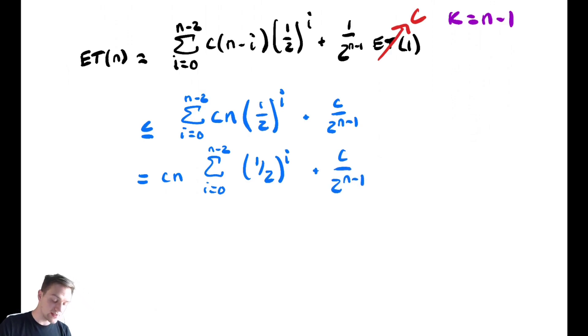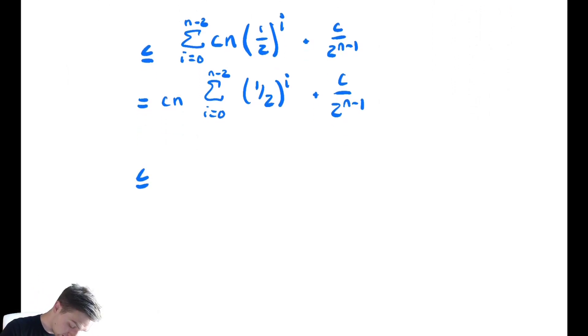Now we just need to bound a geometric summation. That 1/2 to the i is just a geometric summation. We do that by bounding it by an infinite geometric series. Sum from i equals 0 to infinity of 1/2 to the i plus this other weird term. This is less than or equal to. That series we have seen 38 times by now in this class. It converges to 2.